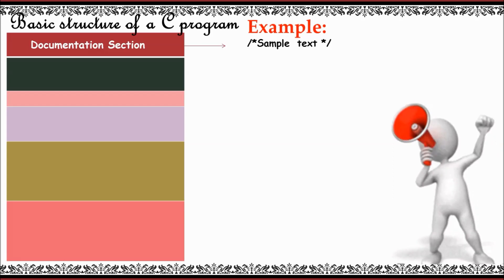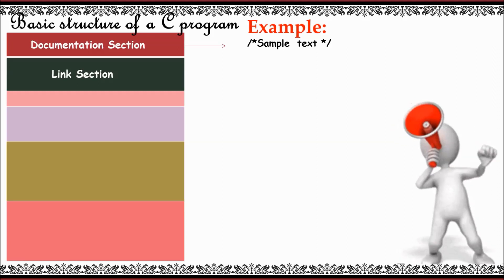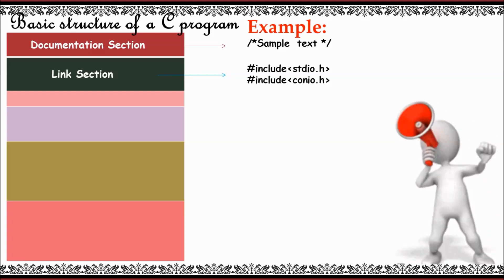And the next part is related to link section. C has a rich set of built-in functions, so in order to use them we make use of this particular section called link section. For example, I have declared two header files here: hash include stdio.h, hash include conio.h. They come under link section.